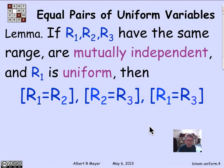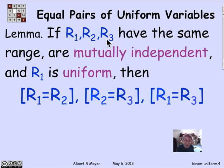Let's prove a little lemma that will be of use later — just some practice with uniformity. Suppose R1, R2, R3 are three mutually independent random variables, and R1 is uniform. The other two only take values that R1 can take as well.